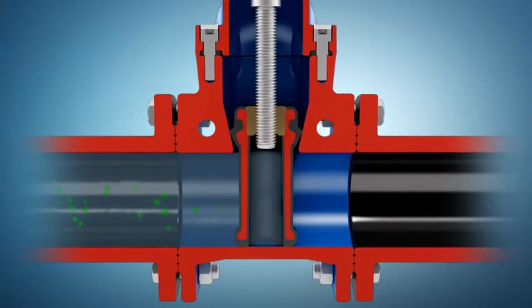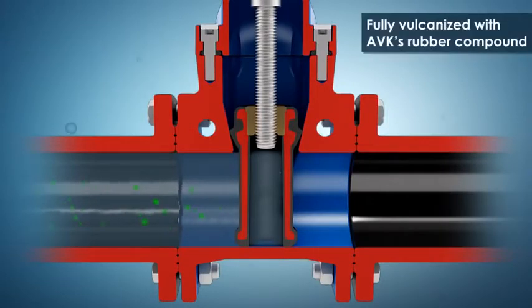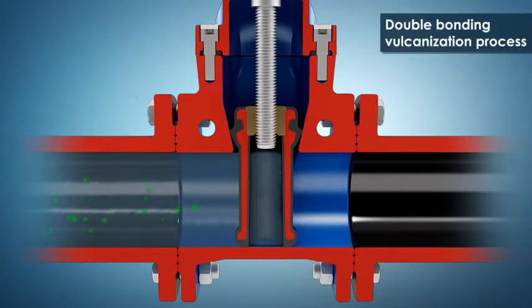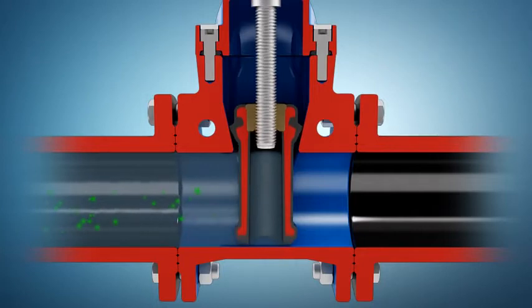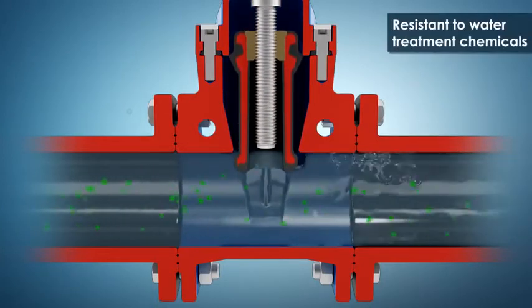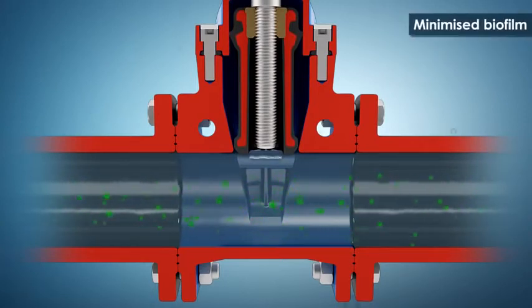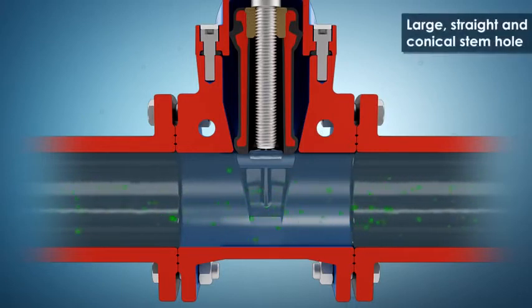AVK wedges are fully vulcanized with AVK's rubber compound with outstanding characteristics. The double bonding process ensures maximum adhesion of the rubber. The resistance to water treatment chemicals secures long life. The minimization of biofilm results in safe distribution of drinking water. And the large, straight, and conical stem hole prevents impurities from being accumulated.